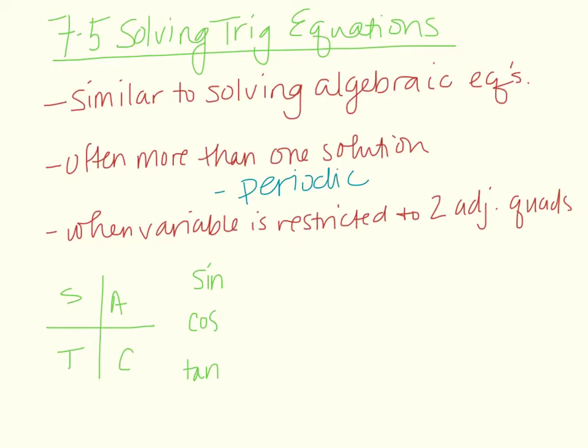So when a variable is not restricted, we get more than one solution. When we do restrict a variable, we limit it to certain quadrants, and that tells us which answers we keep and which ones we throw out.